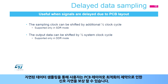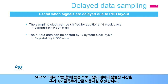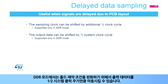Delayed data sampling allows users to compensate for the delay of signals due to constraints on the PCB layout optimization. It allows applications to shift the data sampling time by an additional one-half clock cycle when operating in SDR mode. In DDR mode, the output data can be shifted by one-half system clock cycle to relax hold constraints.